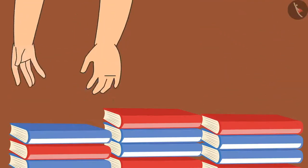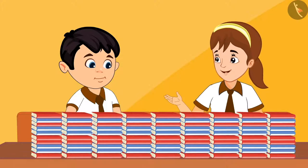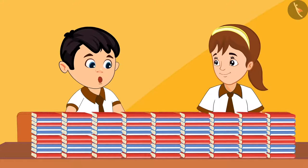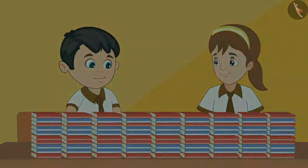Chotu and Aarti started making sets of 10 each. Chotu, how many sets of books have been made? Aarti, 9 sets of 10 books have been made.